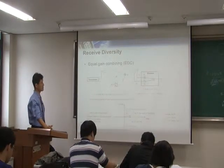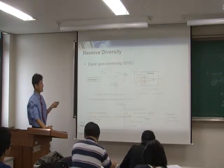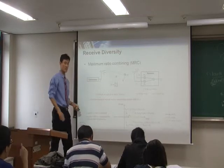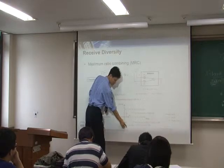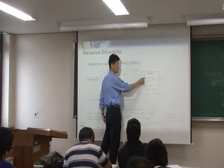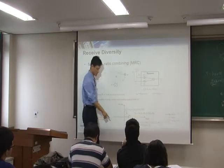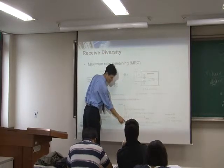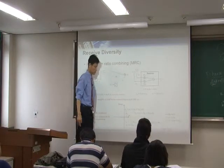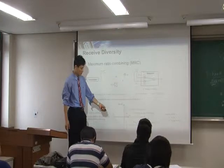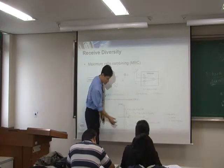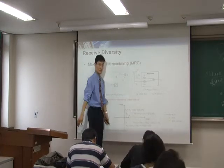The second system is equal gain combining. In MRC, W1 and W2 have different gains because W1 equals H1 complex conjugate and W2 equals H2 complex conjugate, so they are not equal gain. As you can see, W2 is much longer — much bigger — than W1. So these are not equal gain.